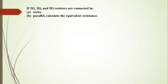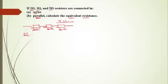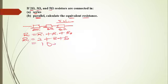Now let's take a calculation. We're told that resistors of 2 ohms, 3 ohms, and 5 ohms are connected in series and we're asked to find the effective resistance first when connected in series and second when connected in parallel. For the series connection: RT = R1 + R2 + R3 = 2 + 3 + 5 = 10 ohms. That is the total resistance when connected in series.